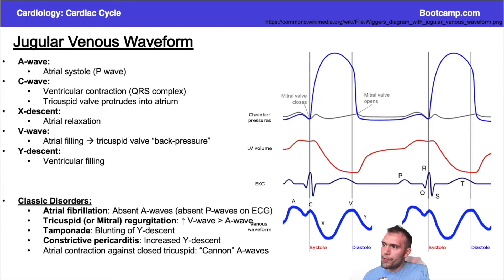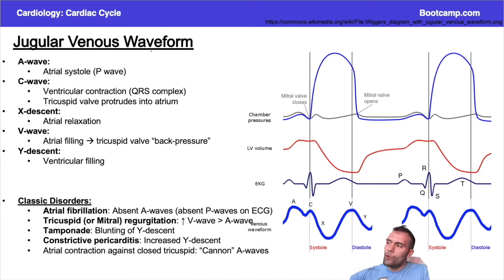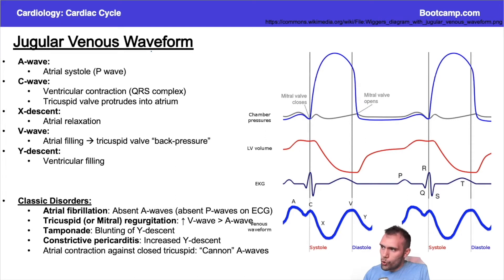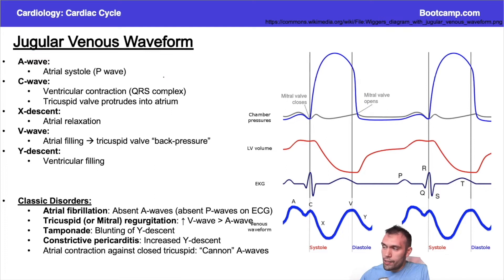Let's look at the jugular venous waveform. The tricky part is that the jugular venous waveform is talking about the right side of the heart, whereas the cardiac cycle is mostly talking about the left side of the heart. If they tell you it's a jugular venous waveform, they're talking about the jugular veins — the right side of the heart.